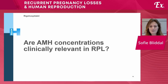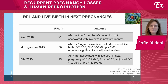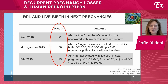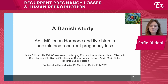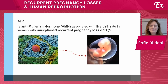Is it clinically relevant to measure AMH? That is, as always, the big question. If we look at studies investigating live birth in the next pregnancies in women with RPL who actually measured AMH, the study sizes were quite small — only a few studies with less than 200 women in each. So what we wanted to do was a larger study investigating anti-Müllerian hormone and live birth in unexplained recurrent pregnancy loss. The aim was to investigate if AMH was associated with live birth rate in these women.